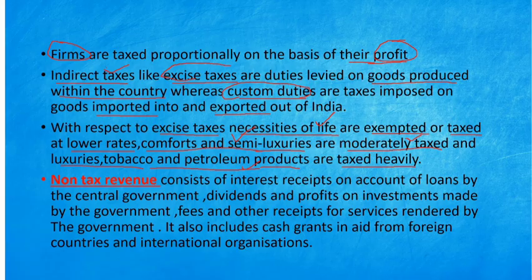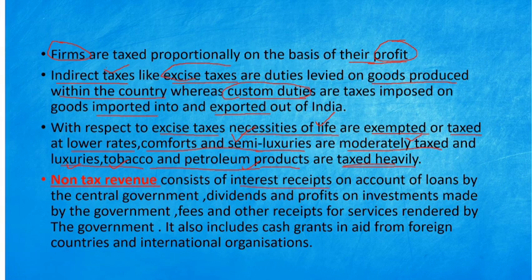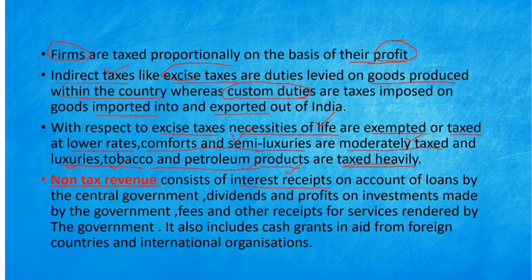Now we shall see non-tax revenue. Other than tax, the government also makes some receipts and income. It consists of interest receipts on account of loans given by the central government — when the government gives loans, it receives interest on them. Apart from that, dividends and profits on investments made by the government — when the government purchases shares of companies and makes investments, dividends and profits received are also a non-tax revenue receipt.